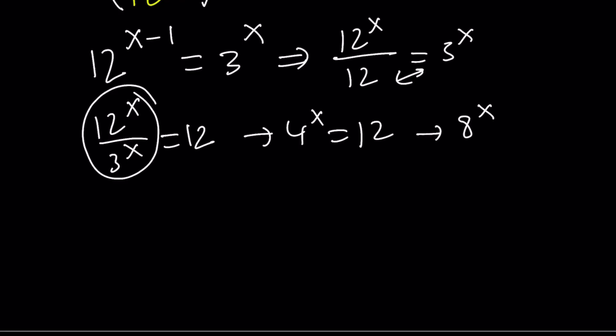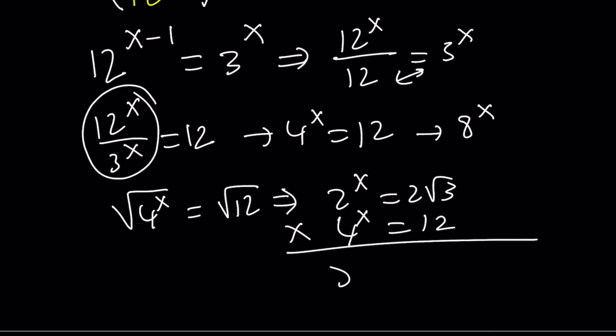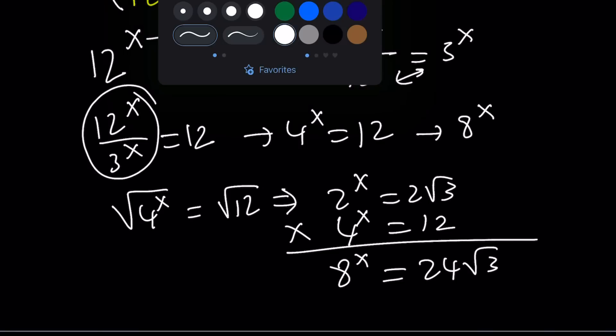Let's square root both sides again, and that's going to give us 2 to the power x equals 2 root 3. But I can use a slightly different approach. 4 to the x is 12. Let's multiply these together to get 8 to the x, which is 24 root 3. So now let's talk about the third method.